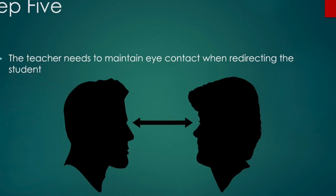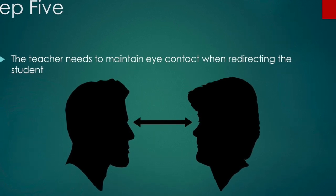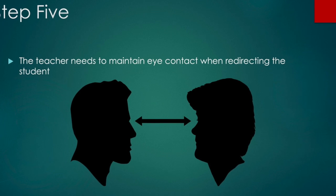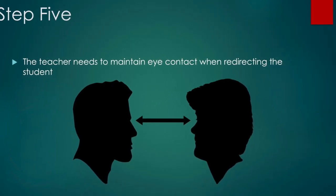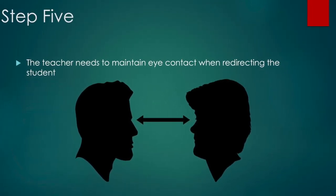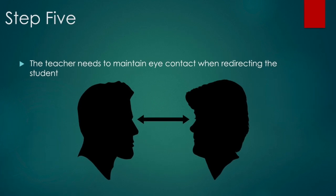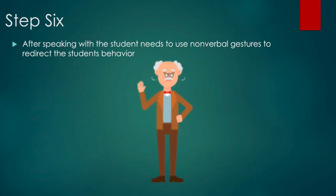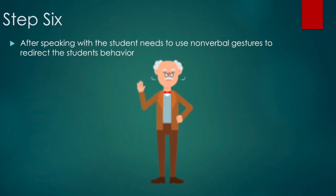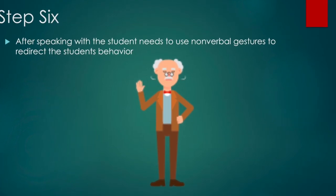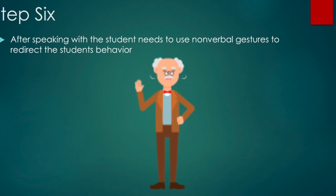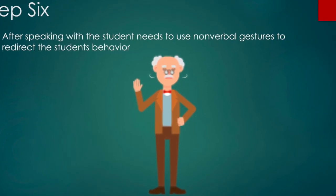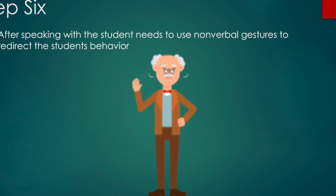Step 5: The teacher needs to maintain eye contact when redirecting the student. Doing this lets the student know you are serious. Imagine a teacher getting after you with her back towards you — you probably wouldn't get the message because you'd be confused as to what's going on. After speaking with the student about their behavior, use nonverbal gestures to redirect them if their behavior persists. Sometimes a simple light touch on their shoulder will redirect them to focus on the task at hand.